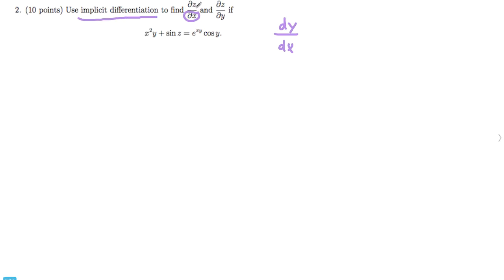So for dz over dx, what you would do is you differentiate with respect to x and treat y as a constant, and then vice versa for dz over dy. So let's try it out.